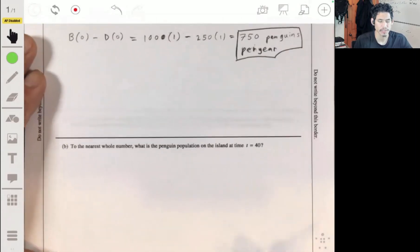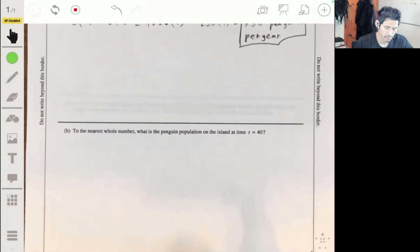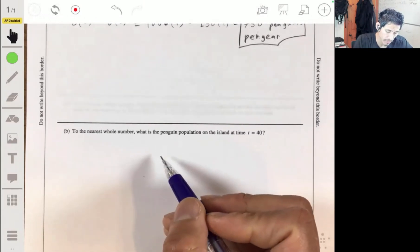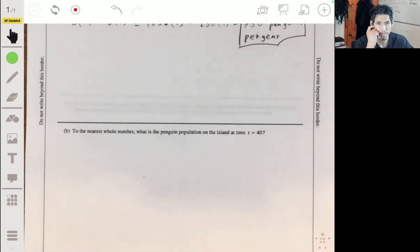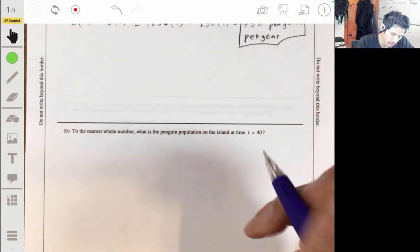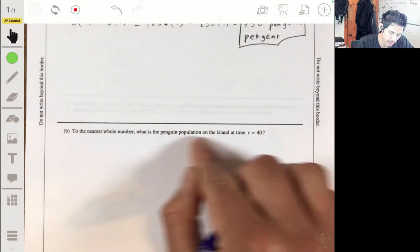Part B: to the nearest whole number, what is the penguin population on the island at time t equals 40? To find the population, we can basically integrate the birth rate minus the death rate, because that's going to undo those rates and give you the births minus deaths, which will give you the total number of penguins or the population of penguins.